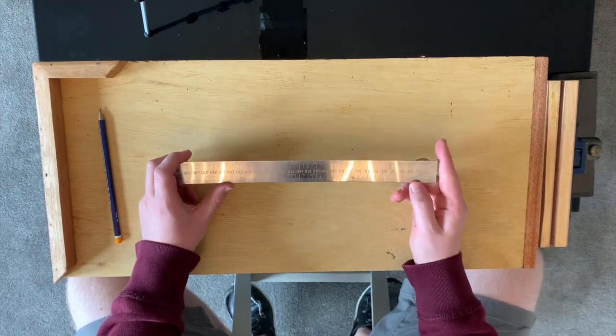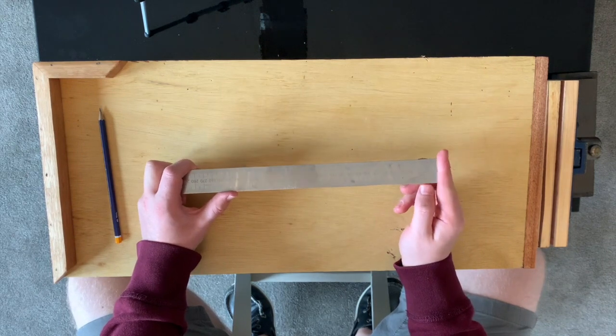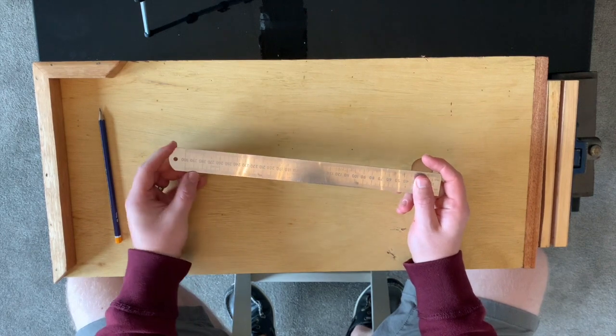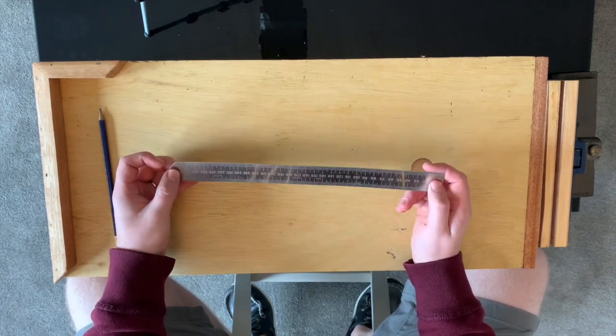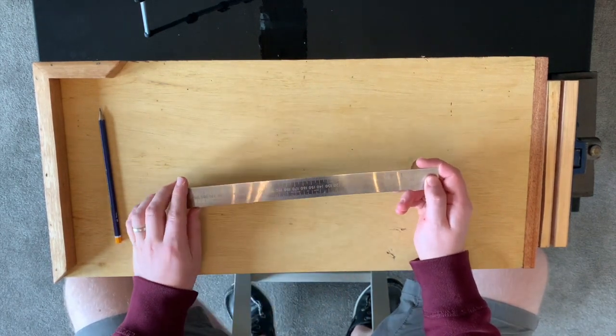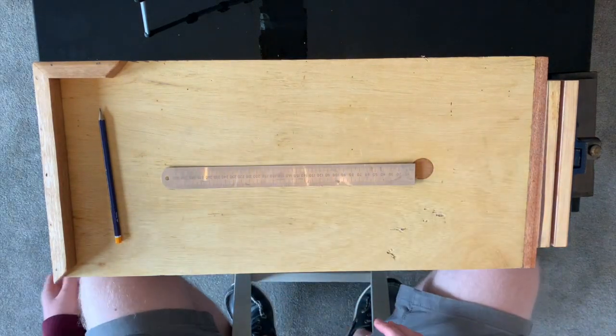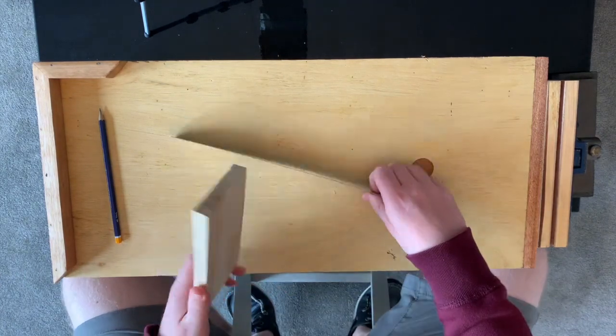Our steel rule is a dead end rule, so zero starts here at this flat end. They normally have a rounded edge and a hole for hanging. They always go in millimeters and what they're used for is two things: measuring and marking out.